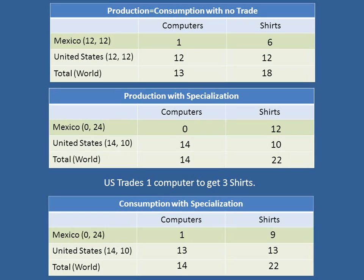One thing to keep in mind is that absolute advantage, although it doesn't explain trade, does explain how wealthy countries are. Even with trade, Mexico is still considerably less wealthy than the United States — total production in Mexico is one computer and nine shirts, compared to the United States with 13 computers and 13 shirts. So absolute advantage explains which countries are rich, while comparative advantage explains why it makes sense to trade and what goods it makes sense to trade. For more on this, I invite you to take a look at my textbook with Tyler, Modern Principles of Economics.